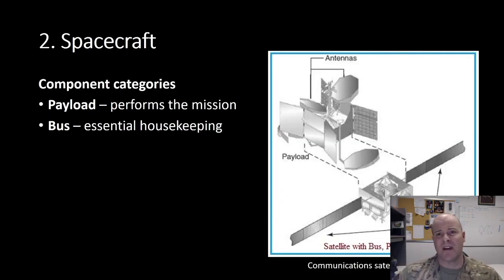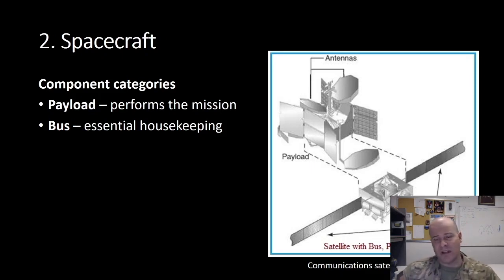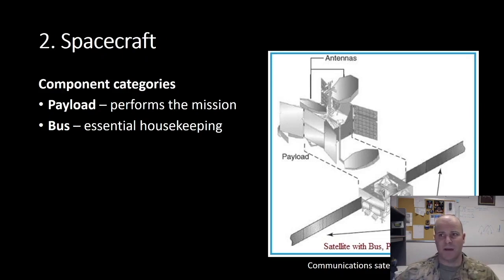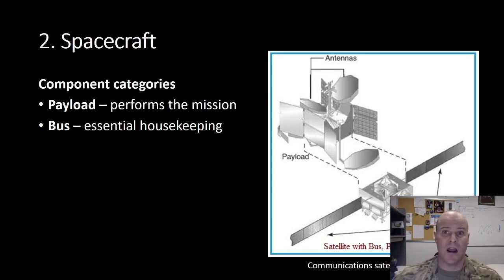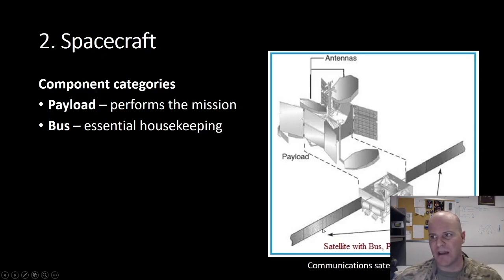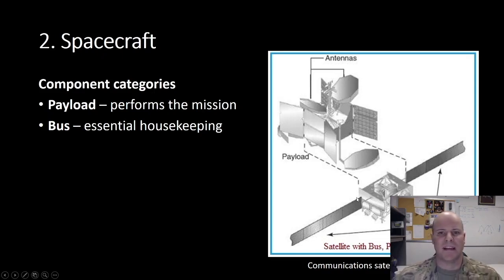Next, we have our spacecraft, which is another key element of space system design. Spacecraft components can be divided into two categories: payload components or bus components. Payload components are essential to performing the mission. Bus components are in support of the payload. For example, on a generic communications satellite, the antennas are a key payload component for performing the communications mission. Solar panels, which are essential for the antennas to function, would be identified as bus components.